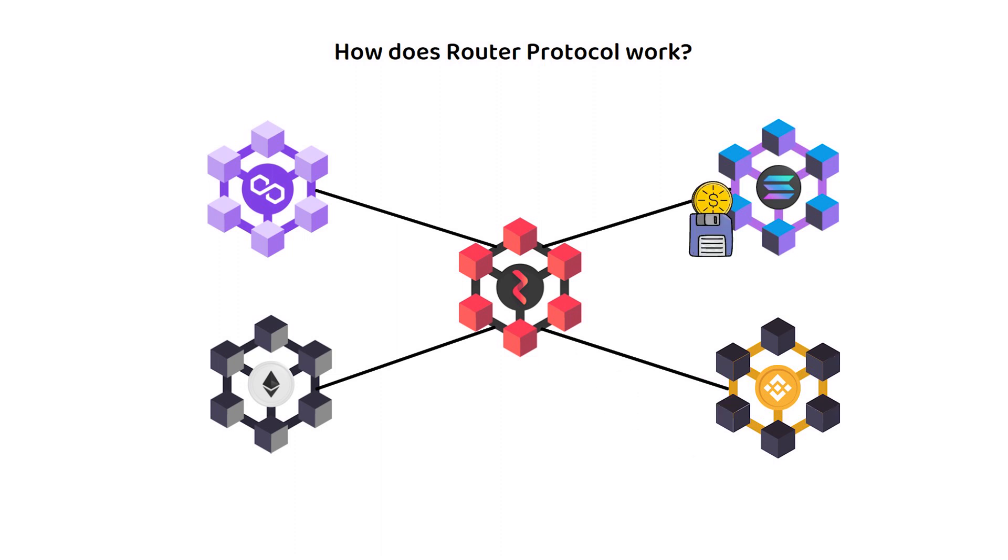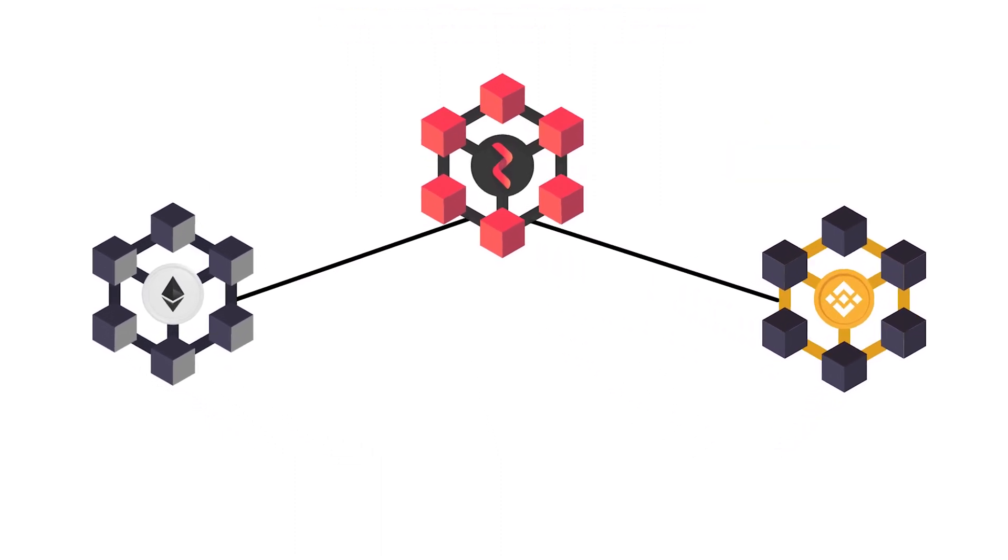For example, if you wanted to swap OP tokens on Ethereum for cake on the Binance Smart Chain, say to take advantage of an arbitrage opportunity on the other network, Router Protocol would facilitate this using an algorithm to find the optimal path and price between the exchanges.